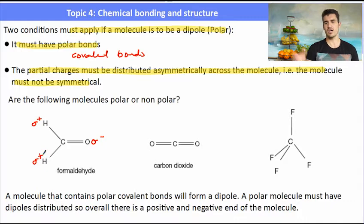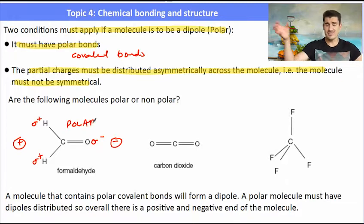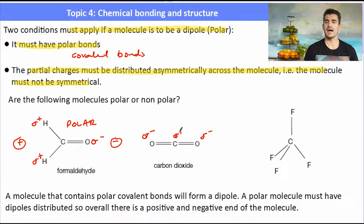For formaldehyde, the oxygen will carry a negative charge and the hydrogens will carry a positive charge, so it has a positive and negative end which we call a dipole. Carbon dioxide doesn't have any overall positive or negative end, so it's non-polar.